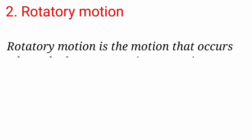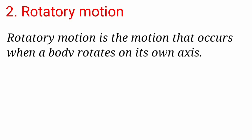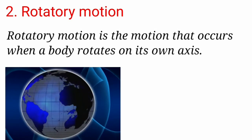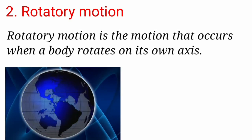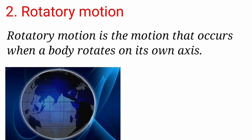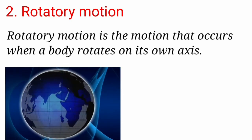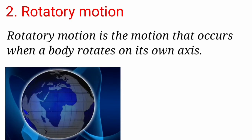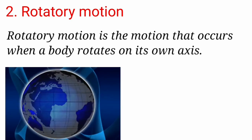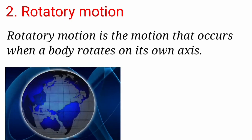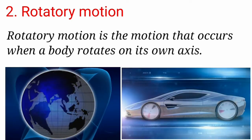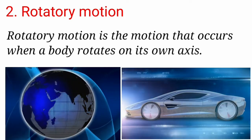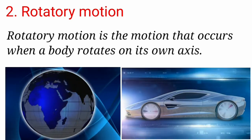Rotatory motion: in this type of motion, the object rotates on its own axis and moves in a circle. For example, the Earth rotating on its own axis about the sun, and the motion of wheels and steering about their own axis of a car.